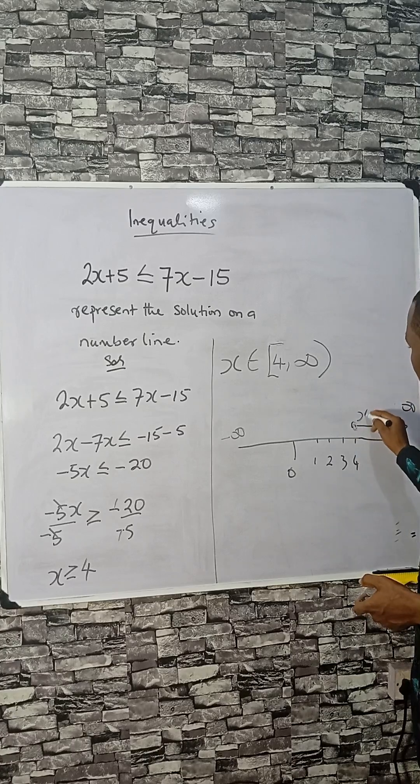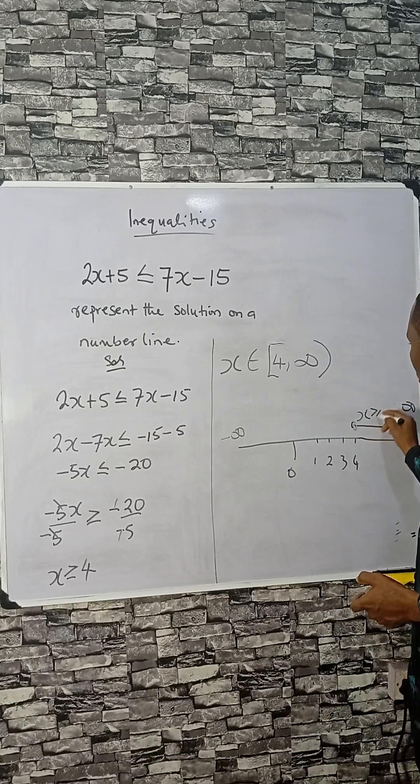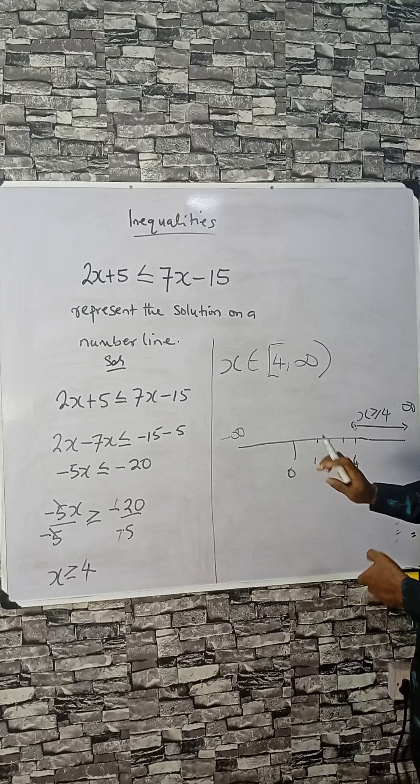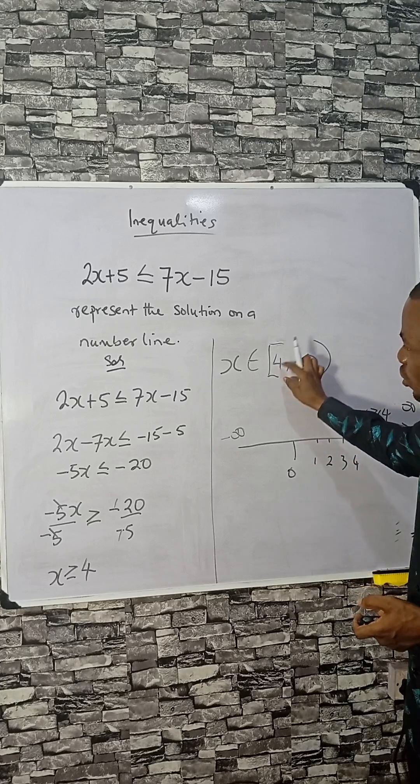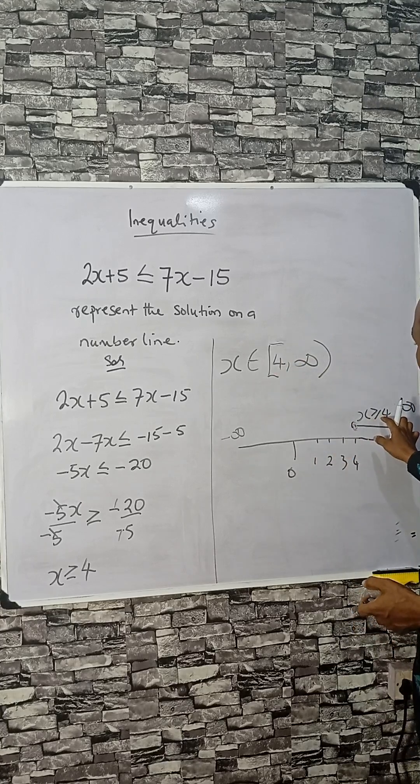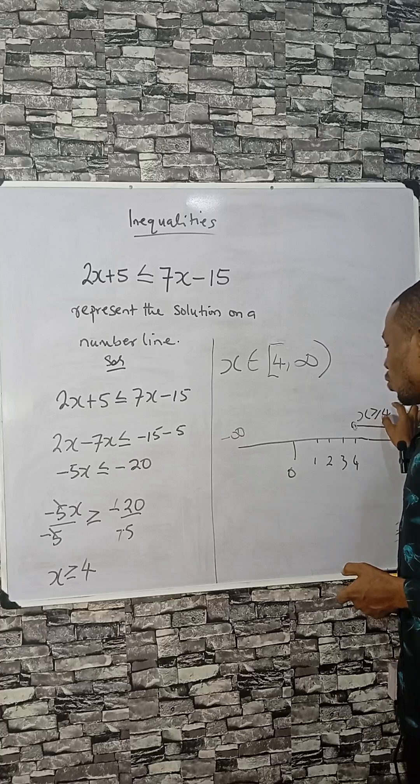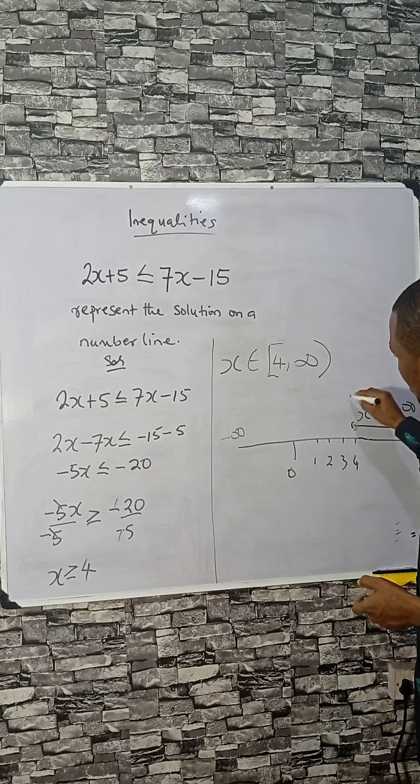This shows that x is greater than or equal to 4, from here to positive infinity. The number 4 is included in the set because the solution is x equals 4 or greater than 4.